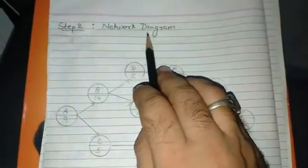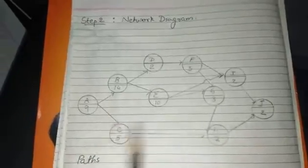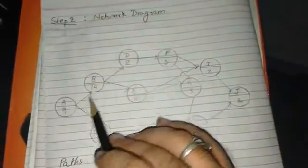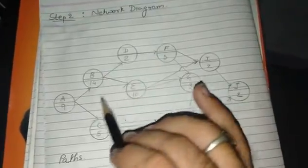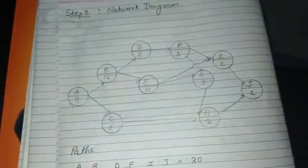After finding the variance, the next step is to draw the network. When we draw the network, we write the mean time. The mean time we previously found we would be writing in the network. Network drawing is simple, like activity A with successors and predecessors. Network drawing we have covered in our CPM.